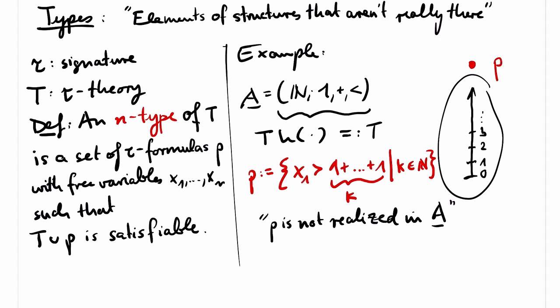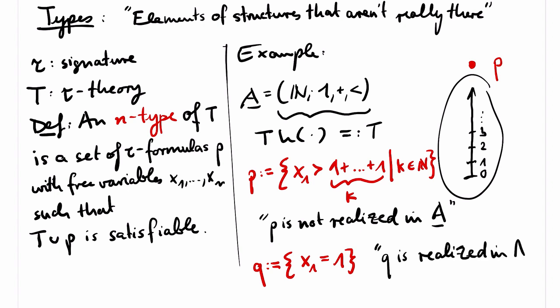We will see later that the union of T and p is satisfiable, so p is indeed a one-type of T. There are also types that are realized in A. Consider, for example, the set q that just contains the formula x1 equals 1. Clearly, T union q is satisfiable, namely by substituting x1 by 1. So here we say that the one-type q is realized in A.